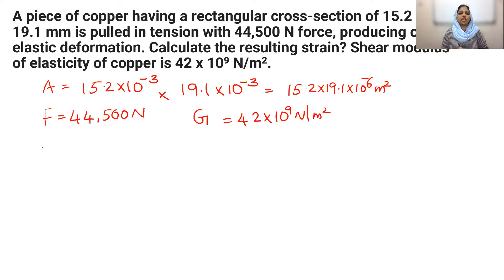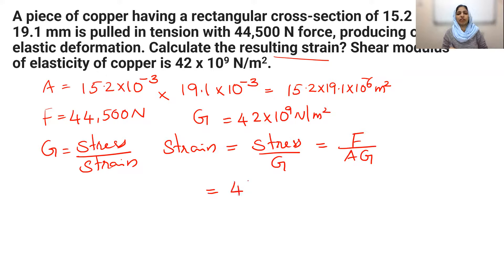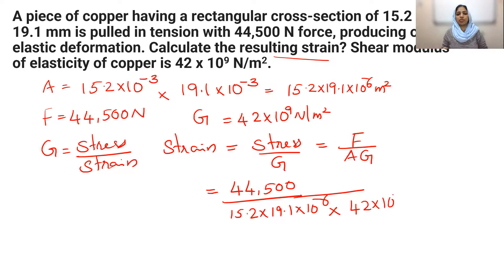We apply the shear modulus formula. G is equal to shearing stress divided by shear strain. Therefore, strain is equal to stress divided by G, which equals F divided by A times G. Strain equals 44,500 divided by the area 15.2 × 19.1 × 10⁻⁶ multiplied by G value 42 × 10⁹. We then perform the mathematical calculation.